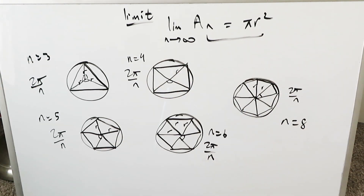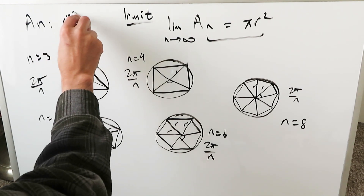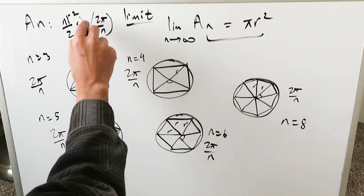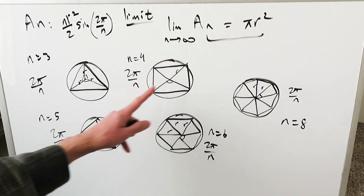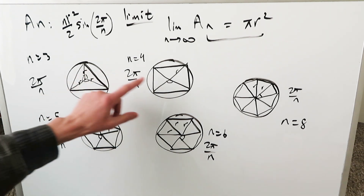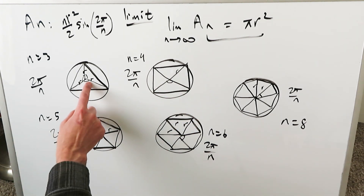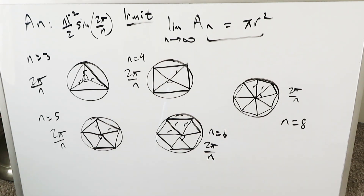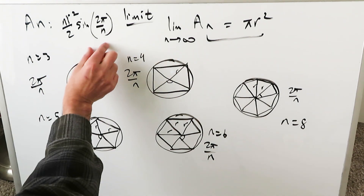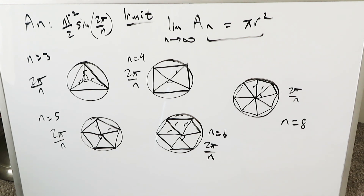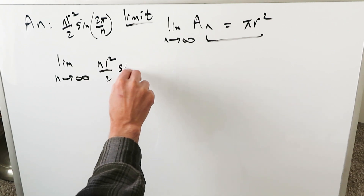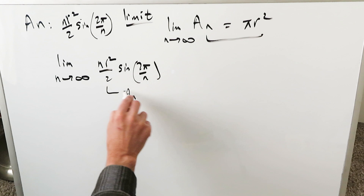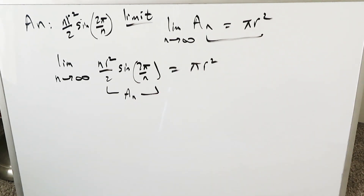That right here is the essence of this limit and we have to show it to be the case. If you do the geometry, the area of these inscribed polygons is always nr²/2 · sin(2π/n). This video focuses on evaluating this limit: limit as n approaches infinity of nr²/2 · sin(2π/n) — which represents aₙ — should equal πr².